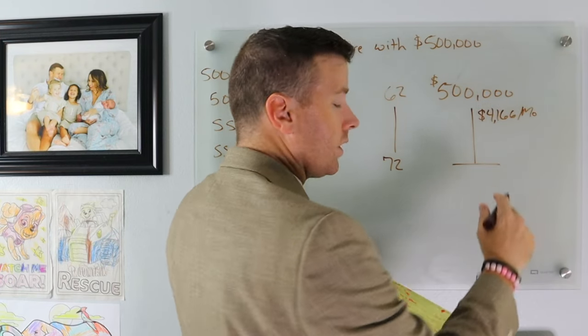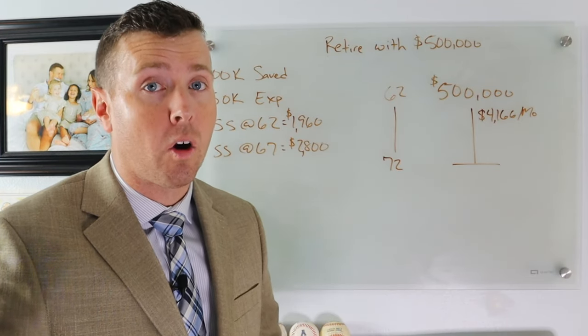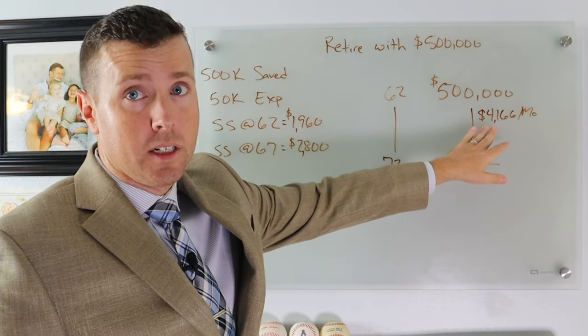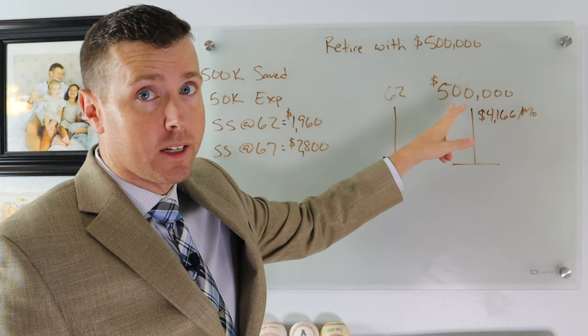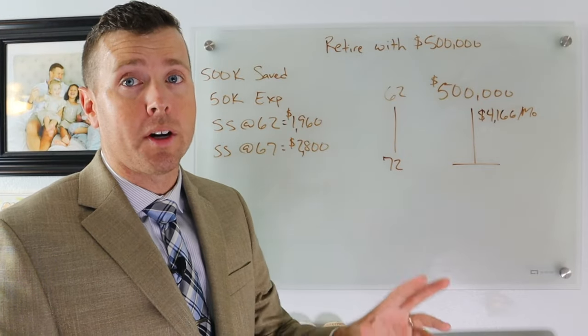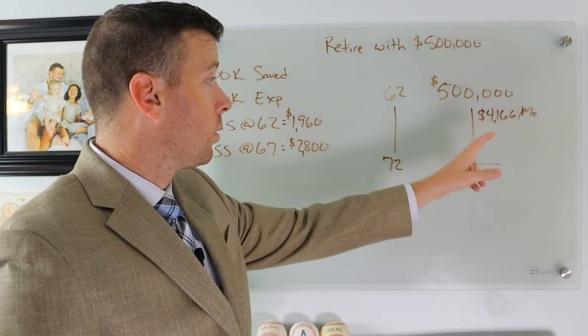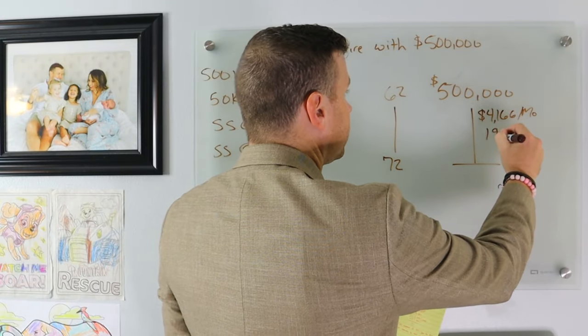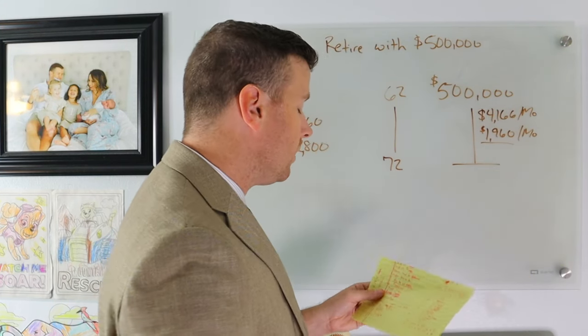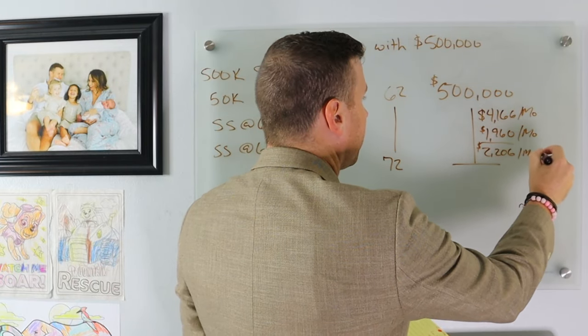We're going to turn on Social Security because if we don't, it's really going to deplete our portfolio. If you're taking $50,000 a year out of your portfolio, that's 10%. That's not going to last very long. Even with the money earning 6, 7, 8% in the market, if you're taking 10% plus inflation, that's not going to last very long. So we're going to turn on Social Security right away, which is $1,960 per month, which means we've got to take out $2,206 from our portfolio per month.